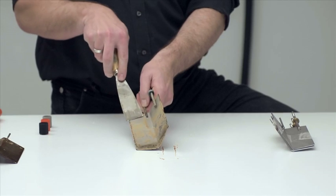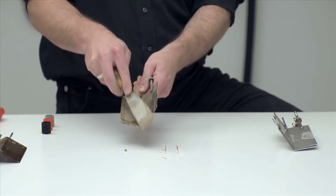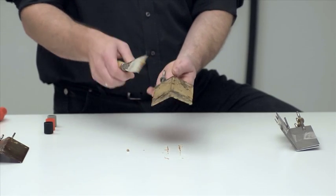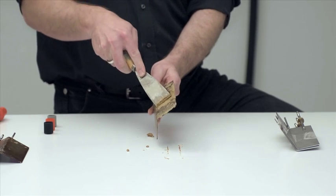To clean, I will now take the putty knife and simply scrape off the deposits. Now this here works quite easily. It could be a bit more difficult to do at times, in such a way you would have to go at it a bit harder, which is not a problem. The electrodes can withstand it.